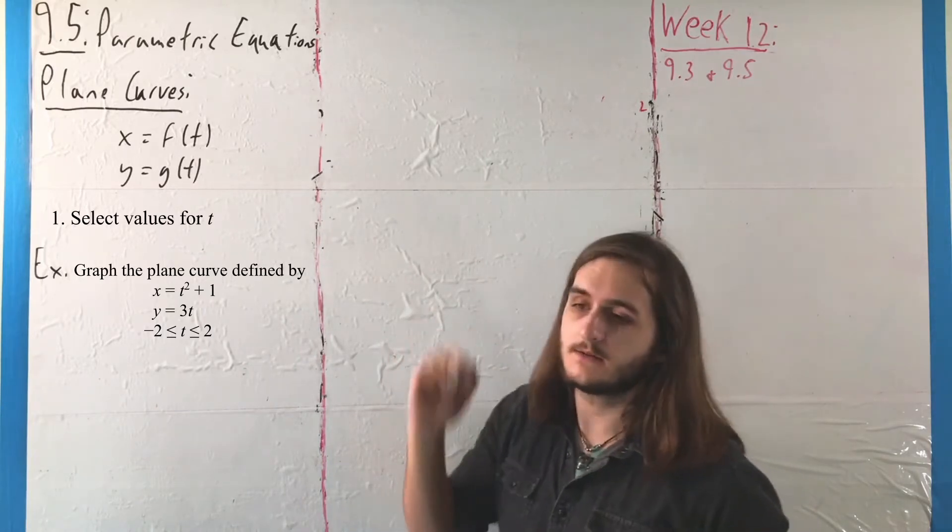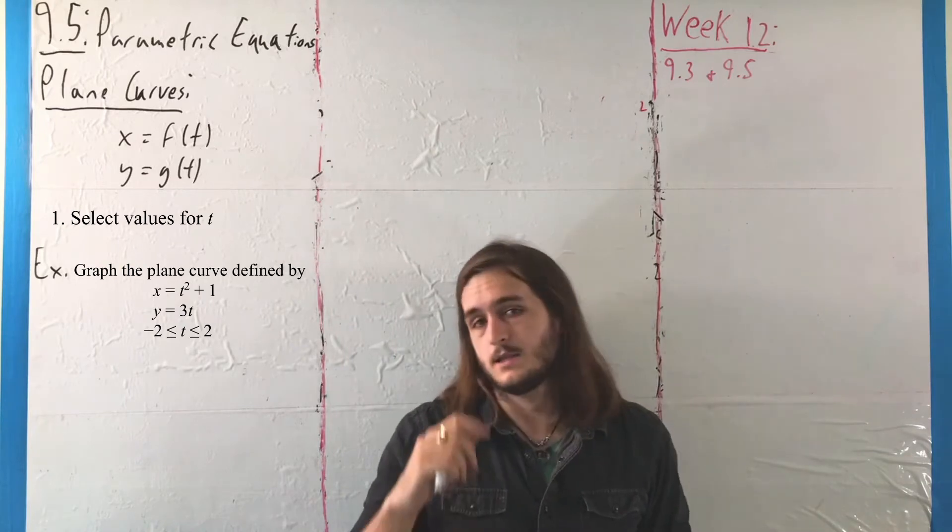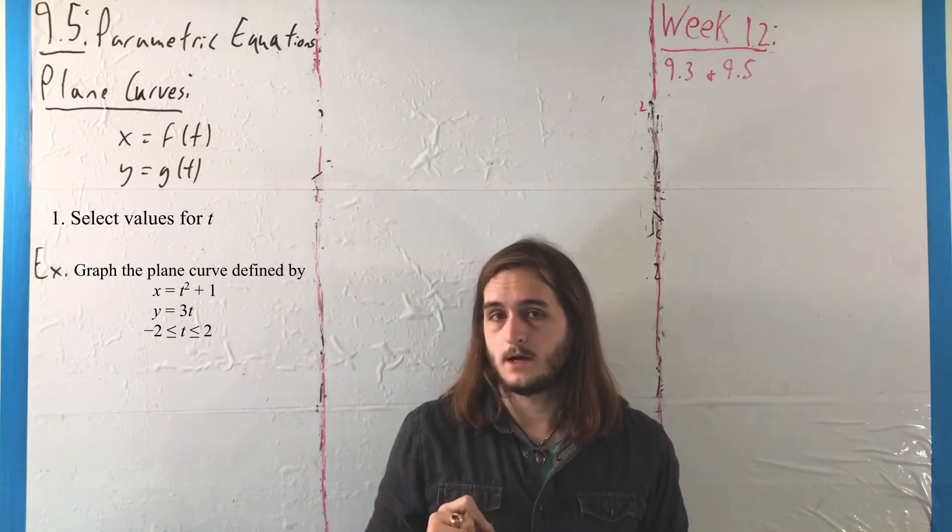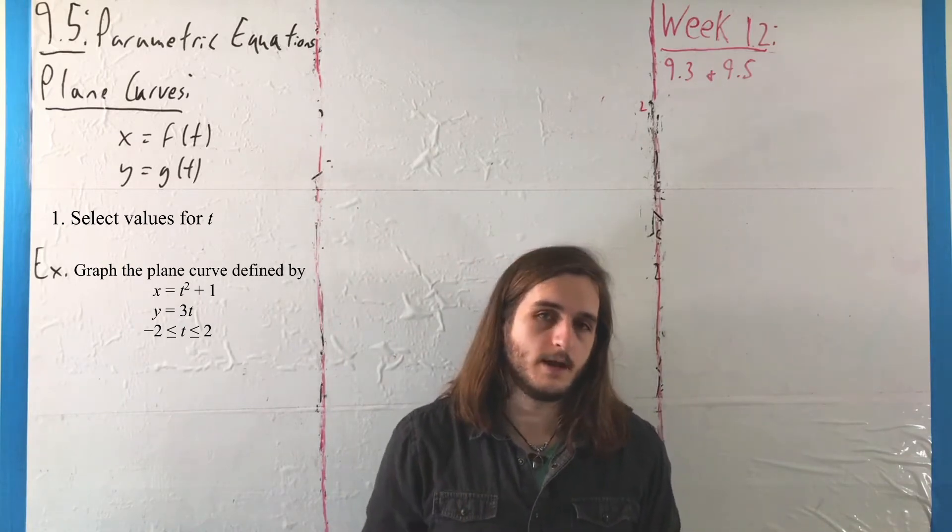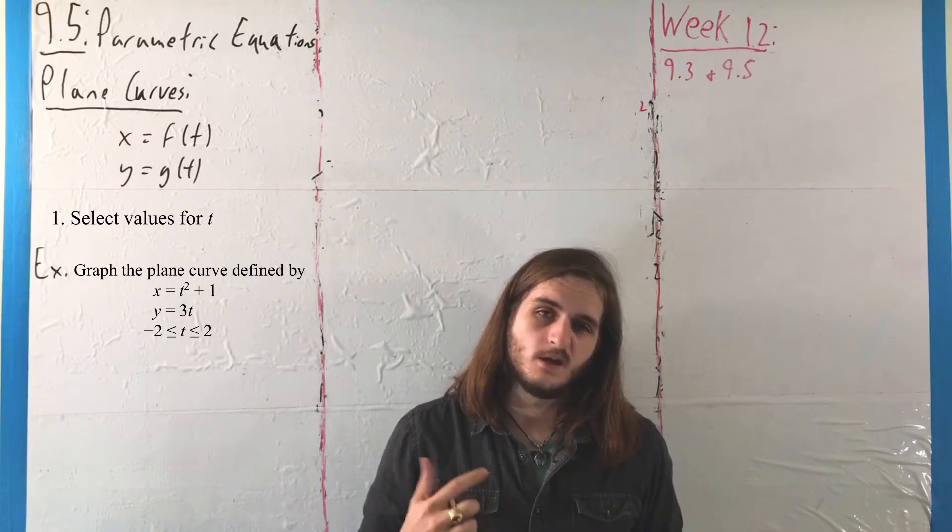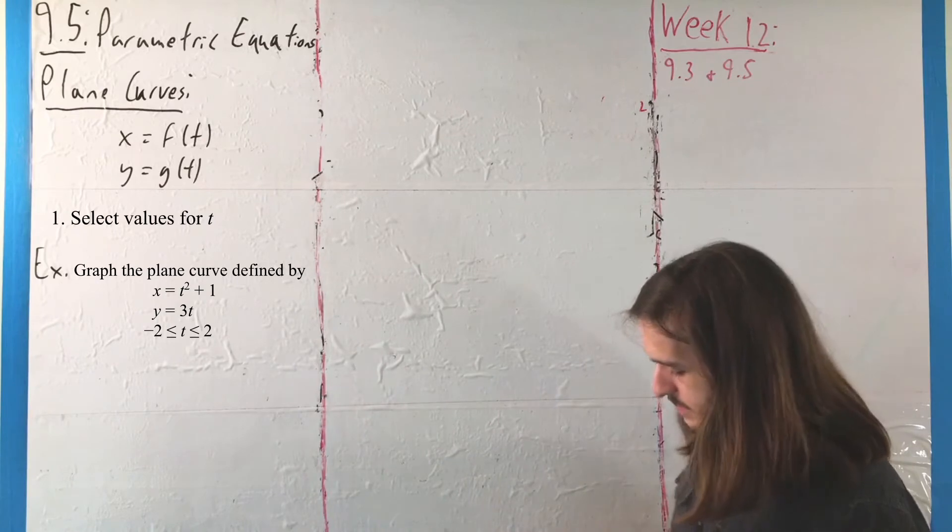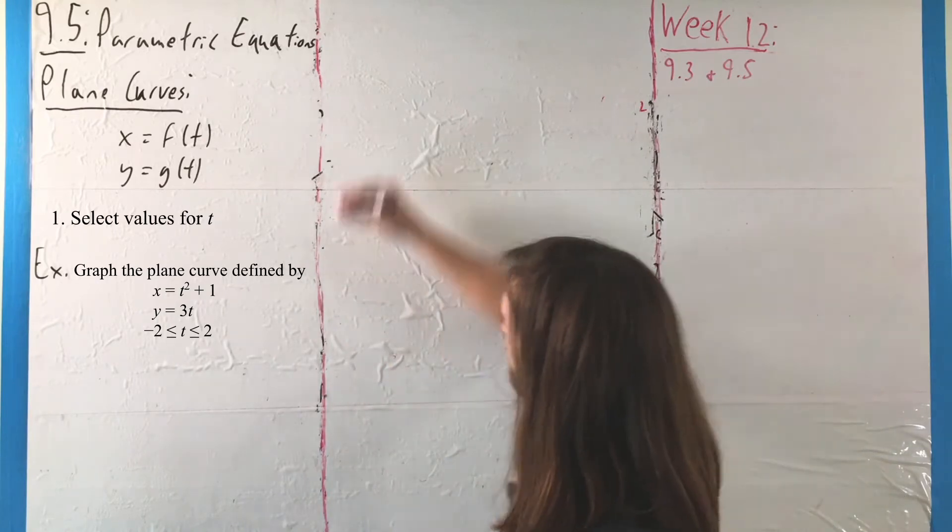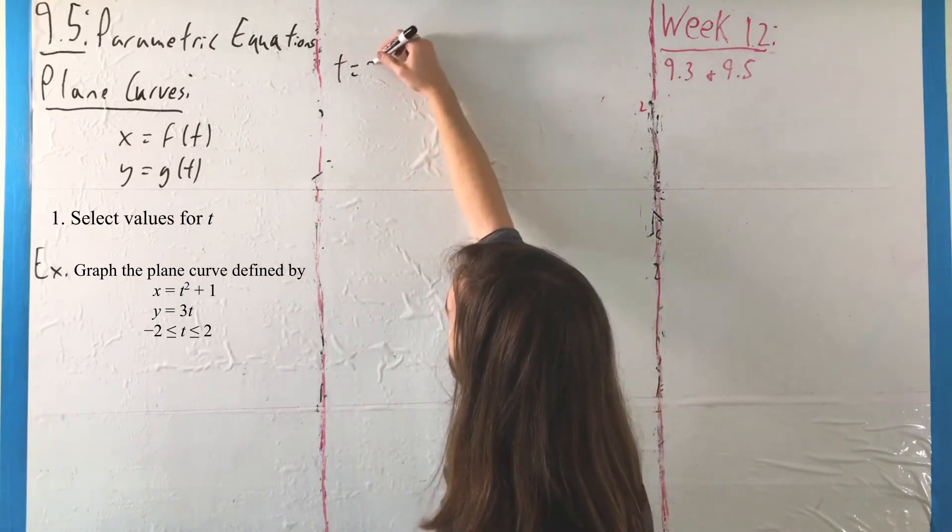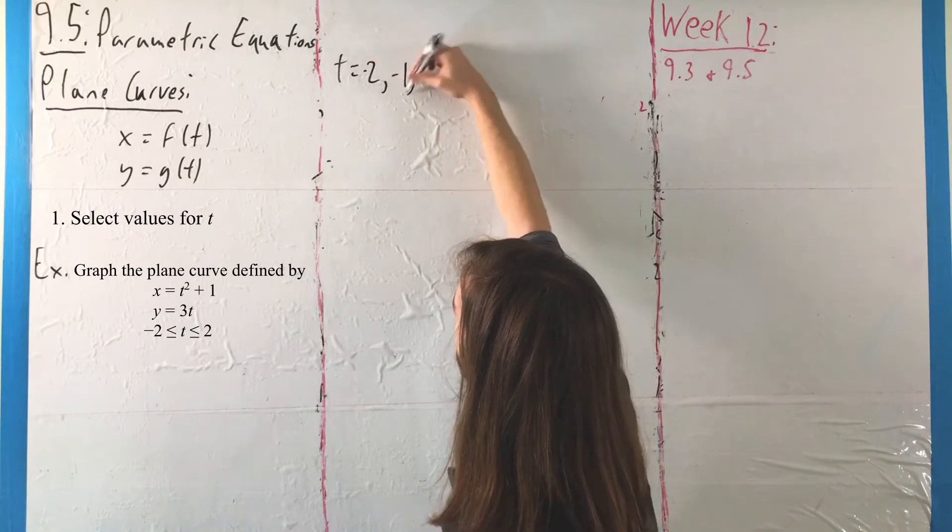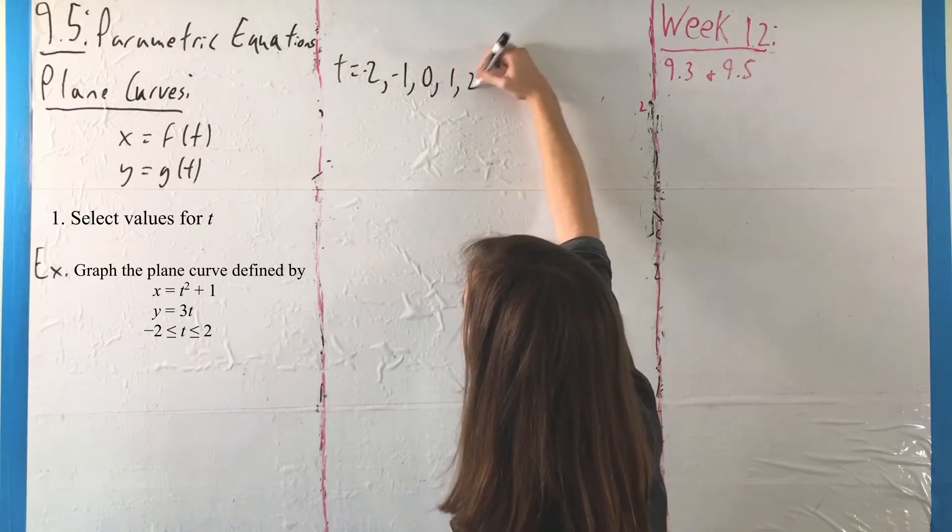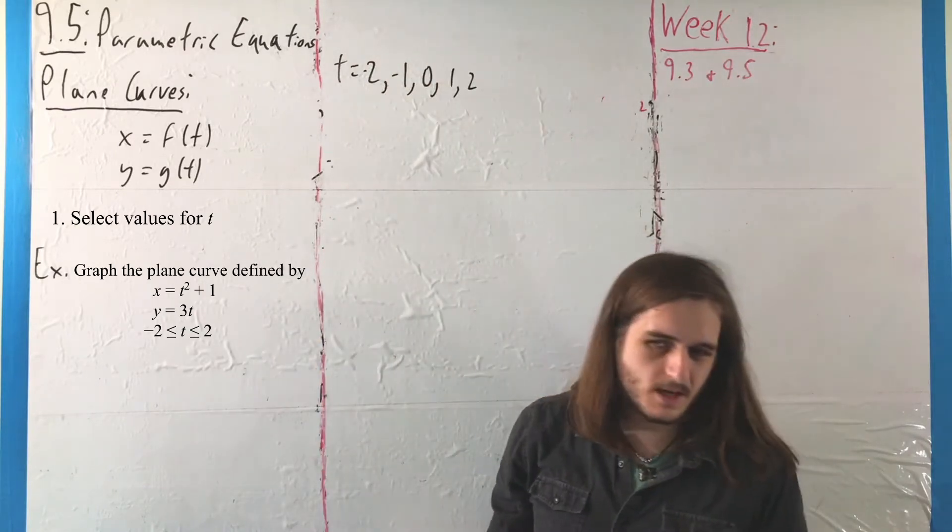We also have some set of values that we're looking at for t. When we're talking about how we're going to graph this, we can start with the easiest ones, and in this case, I would say the easiest ones are the points t equals negative 2, negative 1, 0, 1, and 2. Pick the most obvious candidates. It's often good enough.